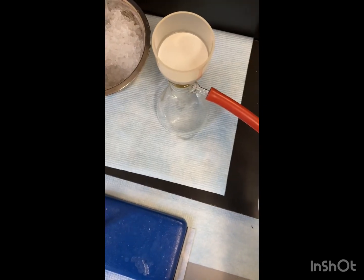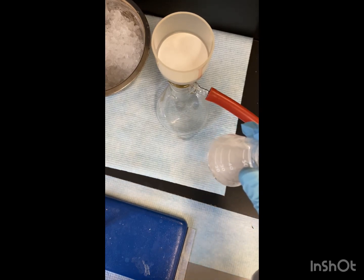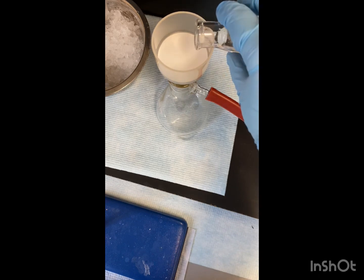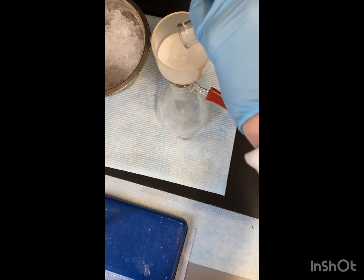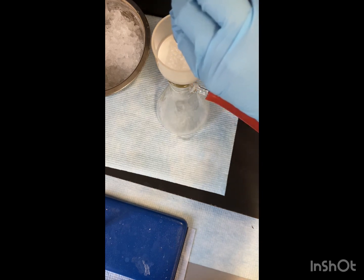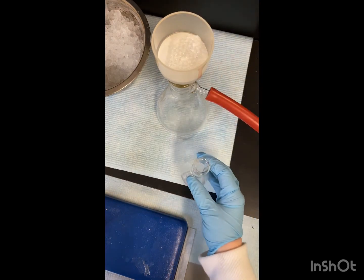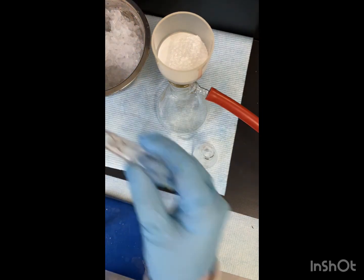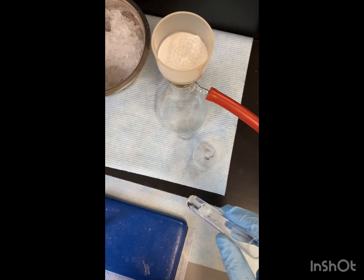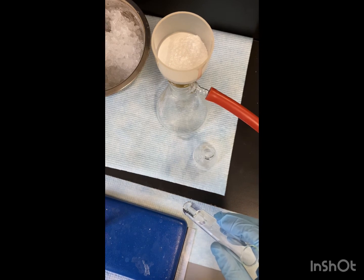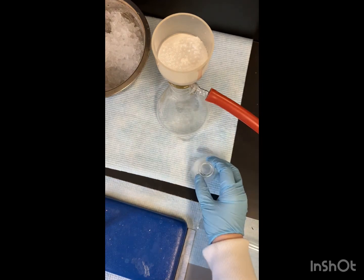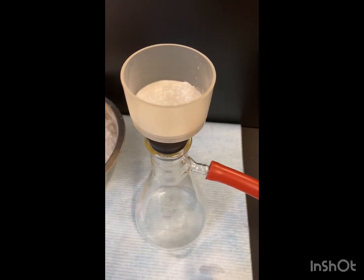Turn on the vacuum. I have our solution in our flask, and we're just going to put it into our vacuum filtration. We're going to take our cooled off crystal water here and just help transfer some more crystals over. We're going to let this dry.